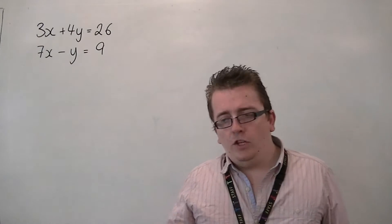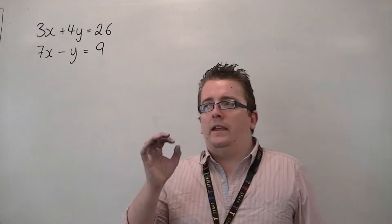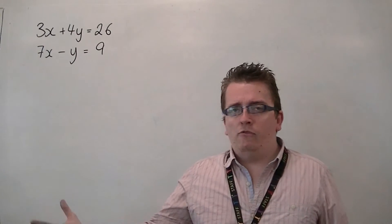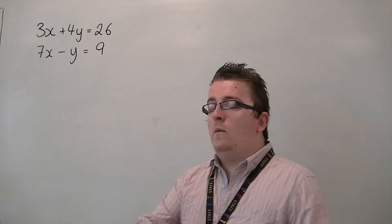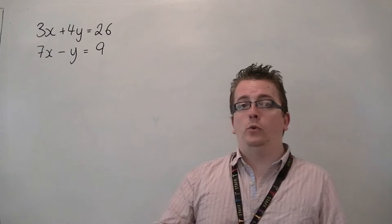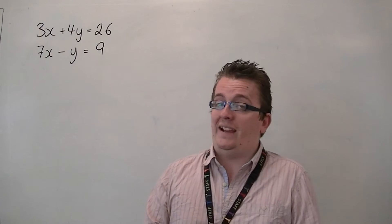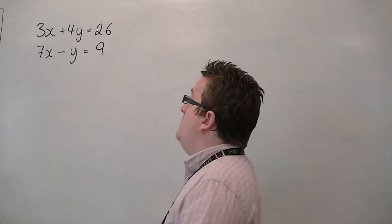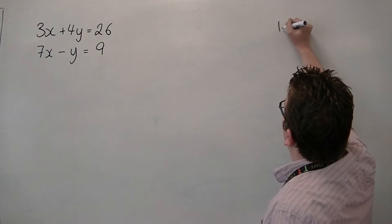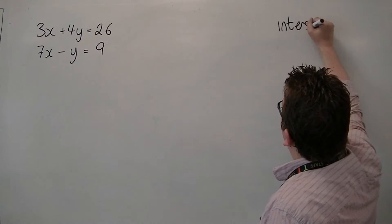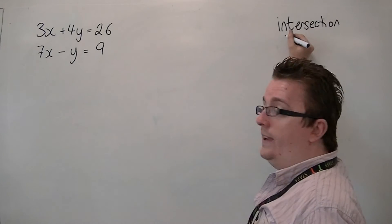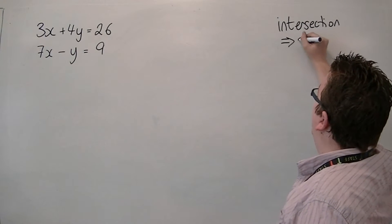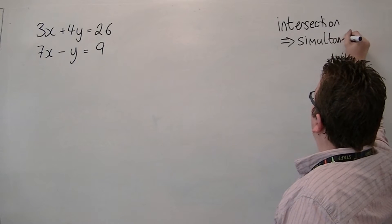Now one thing that you must get clear is that all the way through A-level maths, and really beyond it, when we're talking about two lines or two curves intersecting one another, we mean simultaneous equations. So whenever the word intersection comes up, 9 times out of 10, we are looking at using some form of simultaneous equations.